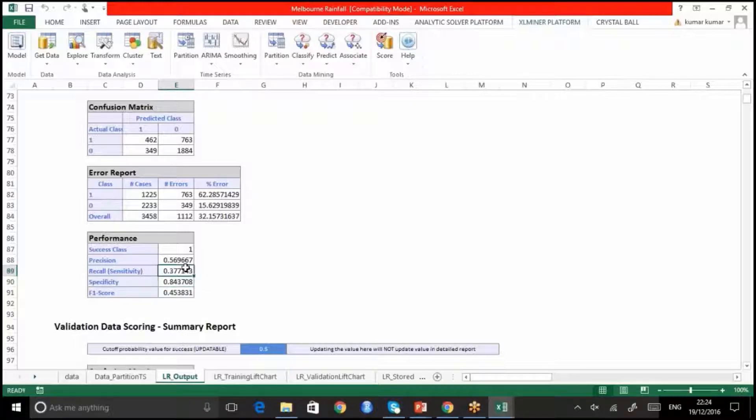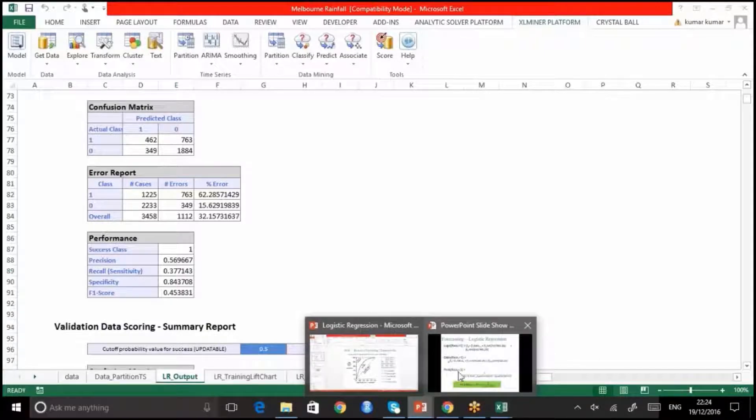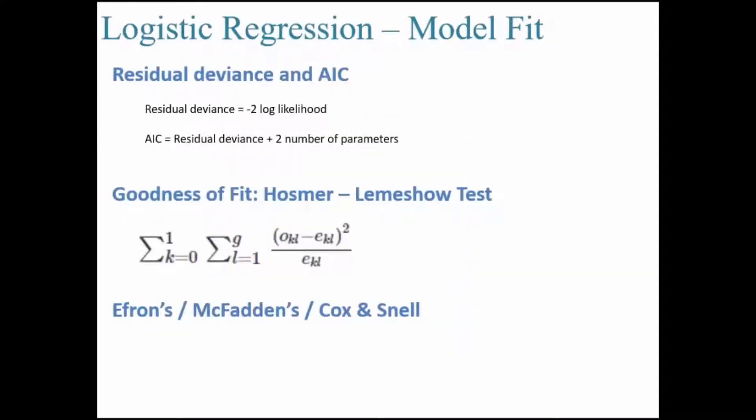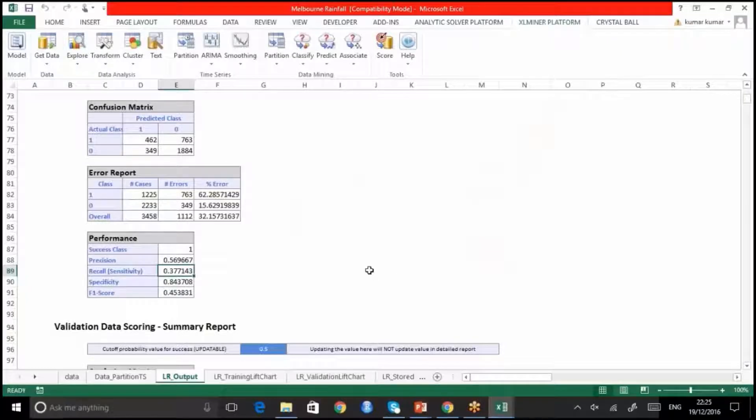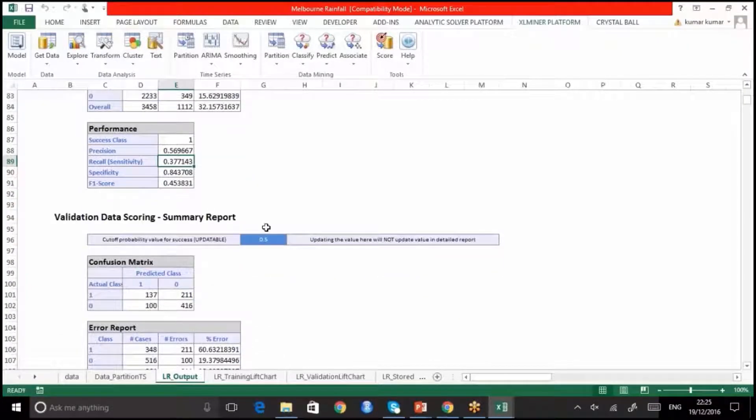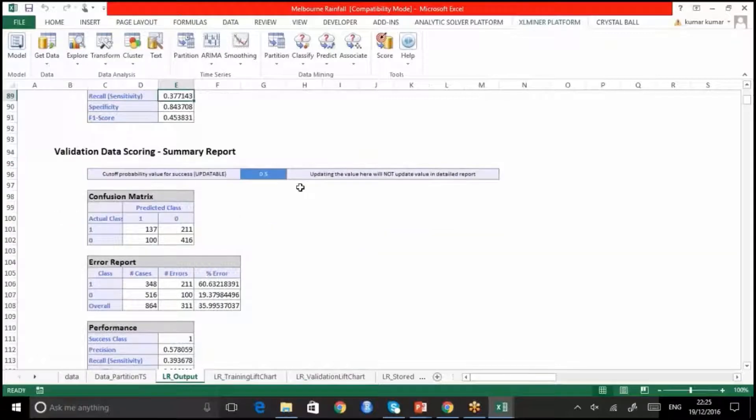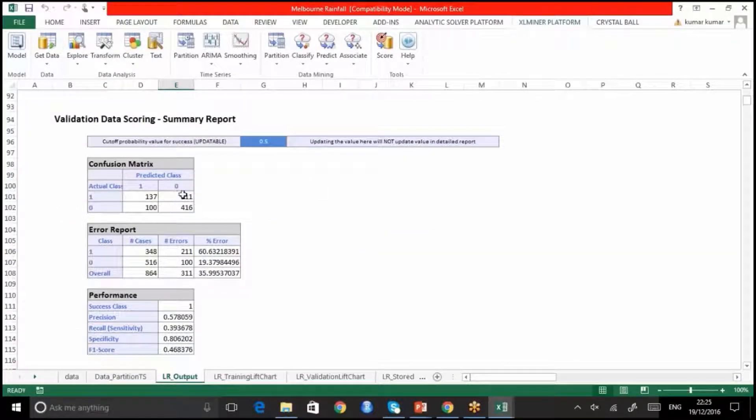If you want to manually calculate this, we know the formula. The formula would be here for sensitivity and specificity. It's true positive by true positive plus false negative. And specificity is true negative by true negative plus false positive. Using that formula when you calculate it, you'll get these values. That is how you need to look at the confusion matrix and try to calculate these specificity and sensitivity values.